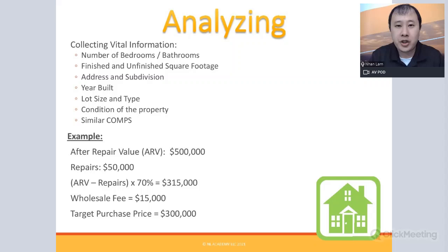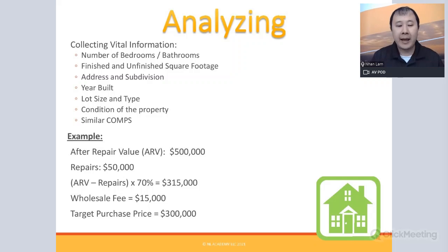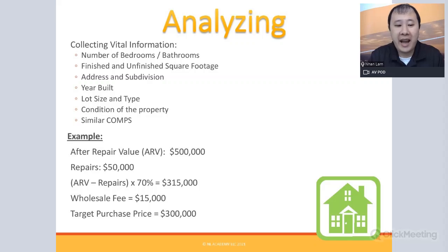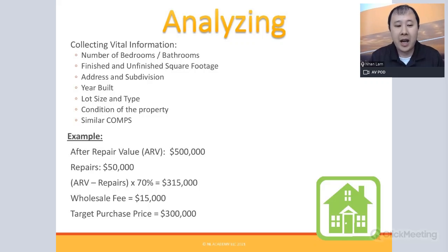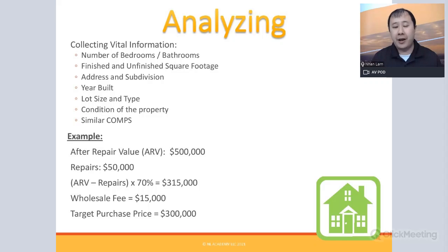Here's an example of how to calculate your target purchase price. First, determine the ARV based on comparables — let's say $500,000. Then estimate the repair cost based on the size and age of the house; in this example, $50,000. Apply the formula: (ARV − Repair Cost) × 0.70 = Target Purchase Price. That gives you $315,000 — the price a fix-and-flip investor would be willing to pay.